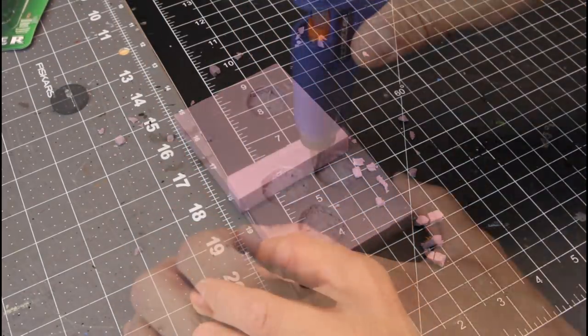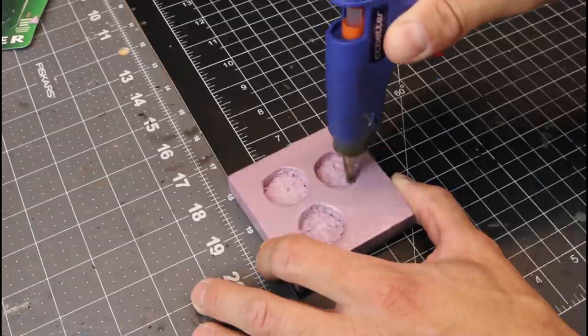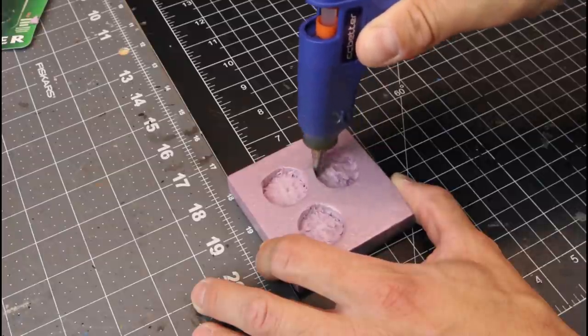And you just want to make sure that you're not going like beyond halfway. You want to get this base maybe an eighth of an inch into the foam from the bottom. Not so that it's flush, but you're trying to get some room for that base to be in there as well as the battery that we're going to put into it as well.